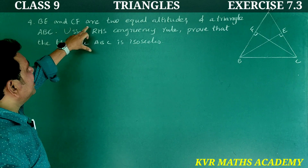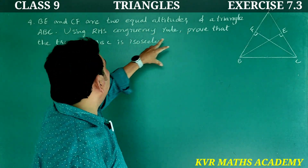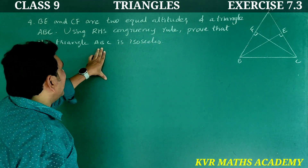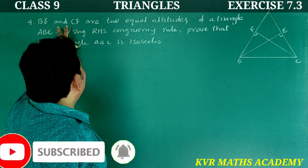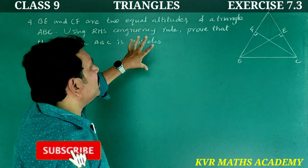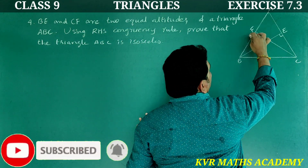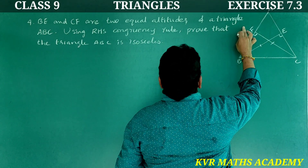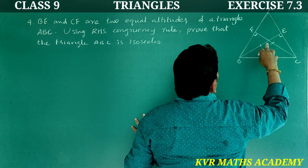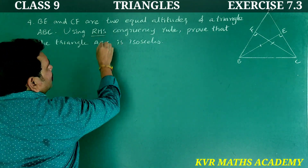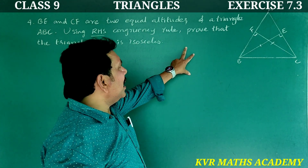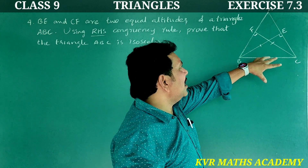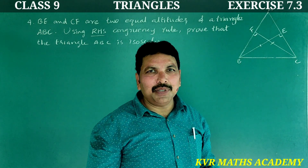Fourth question: BE and CF are two equal altitudes of a triangle ABC. Using the RHS congruency rule, prove that triangle ABC is isosceles. So, BE and CF are two equal altitudes of triangle ABC, and using RHS congruency we prove triangle ABC is isosceles — that is, we prove AB is equal to AC.